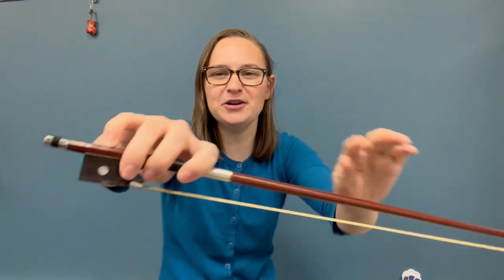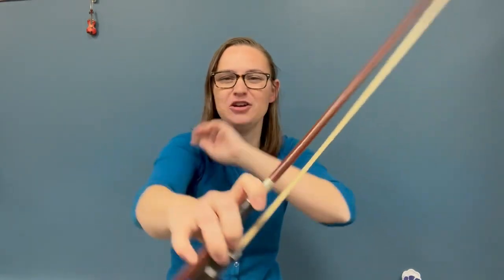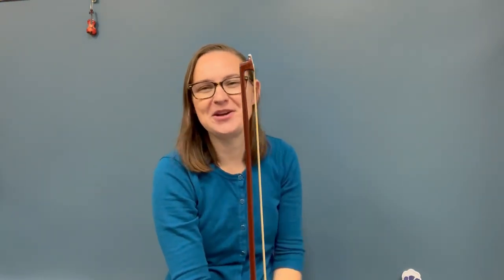And our next bow exercise is the spider crawl. This one's a tough one. Get ready to work out your fingers. For the spider crawl, you're again going to start with that good bow hold and you want it straight up and down. And you are going to crawl your hand, touching only the stick of the bow, from the frog all the way up to the tip.